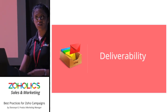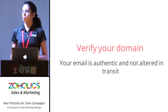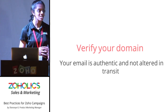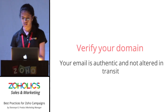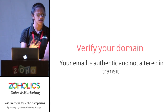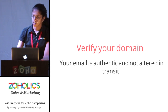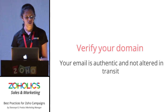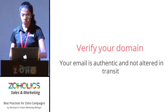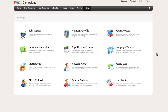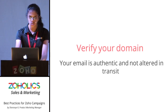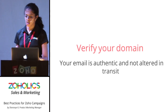Let's cover deliverability. Deliverability defines the number of emails that are actually delivered and have reached your recipients' inboxes. There's something you need to do in Zoho Campaigns, and that involves two types called SPF and DKIM. If you go to your Settings tab, you'll see a tab called Email Authentication — this is where you allow Zoho Campaigns to send emails on your behalf, which ensures most of your emails are delivered to your recipients' inboxes.